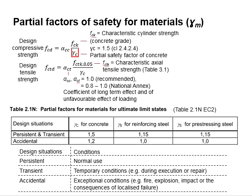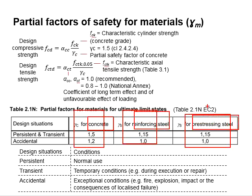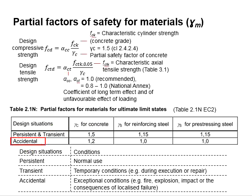The partial factor of safety of the materials can be obtained from Table 2.1 in Eurocode 2. It is classified based on the type of material, which are the concrete, the reinforcing steel, and pre-stressing steel. There are two main types of design situations. For the persistent and transient conditions, the partial factor of safety of concrete is 1.5. As for the accidental design situations, the partial factor of safety is 1.2.